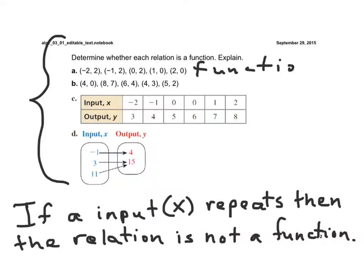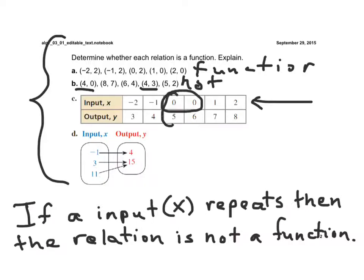Letter B: 4 is paired with 0, but 4 is also paired with 3. Since 4 is paired with 2 different y values, that is not a function. Letter C: the input value 0 appears twice — 0 is paired with 5, and 0 is also paired with 6. So again, this is not a function.